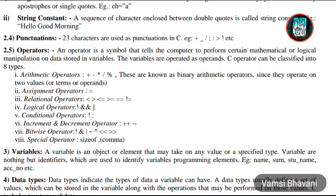Now we are going to cover operators. An operator is a symbol that tells the computer to perform mathematical or logical manipulation on data stored in variables. The variables are operated on as operands, and C operators can be classified into 8 types.